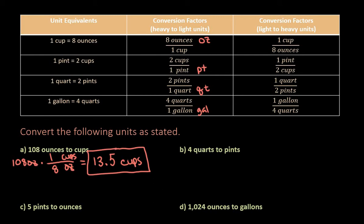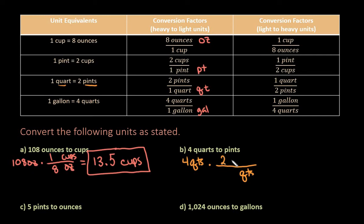Moving into the next one, we want to go four quarts to pints. So we can see that there is a direct relationship from quarts to pints. We would put the quarts on the top and eliminate them, so we make sure quarts are on the bottom here. We would use the one where the quart is on the bottom and pints is on the top — two pints on top and one quart on the bottom. Our quarts would cancel out and I'm left with four times two, which is eight pints. So four quarts is equivalent to eight pints.